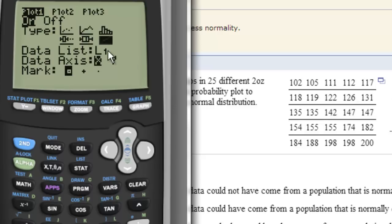Then you want the data list to be L1 because that's where our list is. And you want the data axis to be X. Once that's done, then we can go to graph.